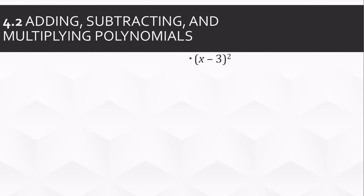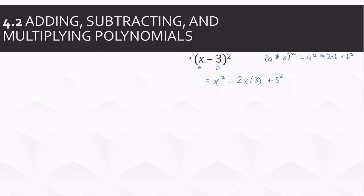Let's try some special patterns. Starting with (x minus 3) squared. That pattern is: (a plus or minus b) squared equals a squared plus or minus two ab plus b squared. We're using the minus, so we only have the minus. Here, a is x and b is 3. Filling in the pattern: x squared minus 2 times x times 3 plus 3 squared. Simplifying the middle part: two times three is six, and three squared is nine. So the answer is x squared minus 6x plus 9.